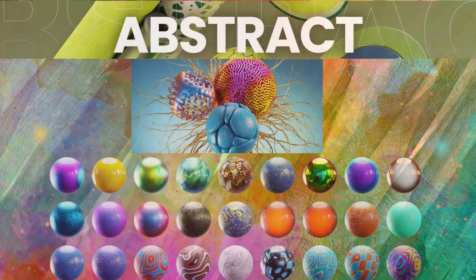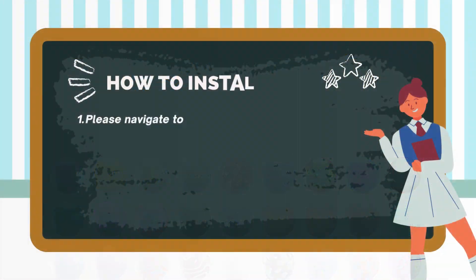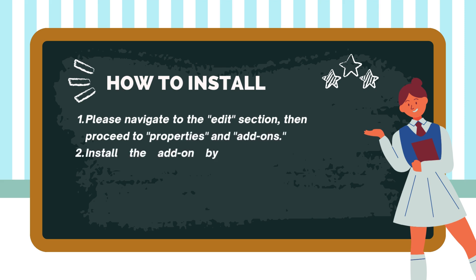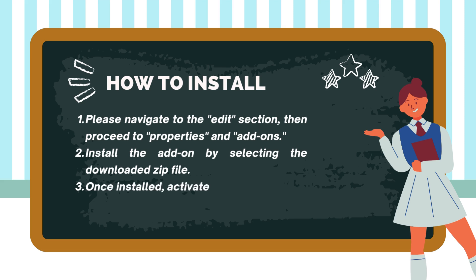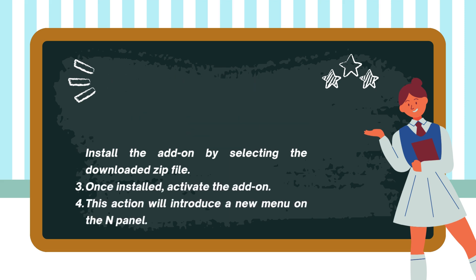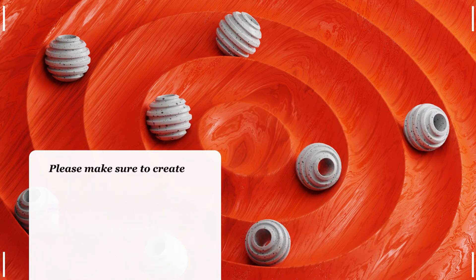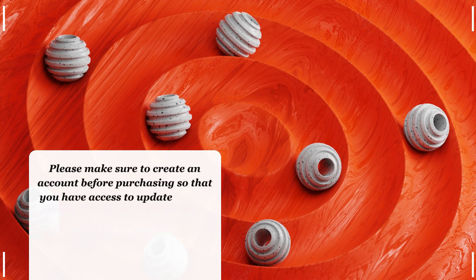To install, navigate to the Edit section, then proceed to Preferences and Add-ons. Install the add-on by selecting the downloaded zip file. Once installed, activate the add-on — this action will introduce a new menu on the N panel. Please make sure to create an account before purchasing so that you have access to update files.